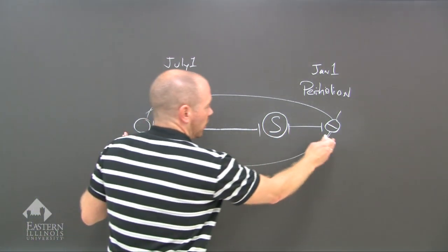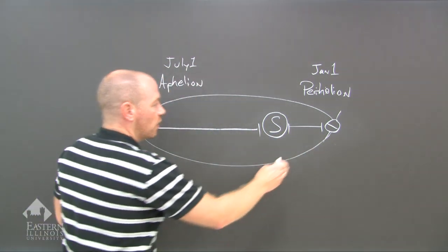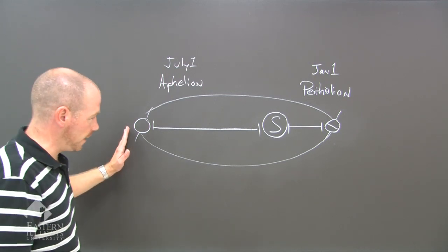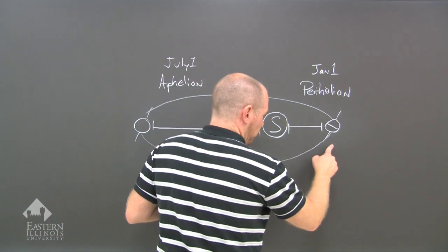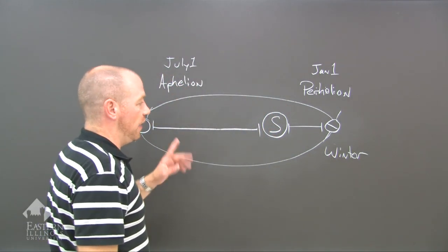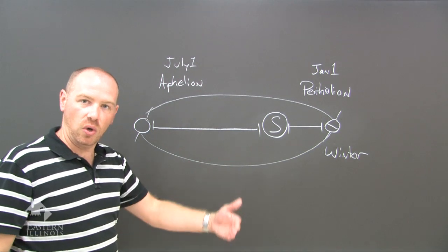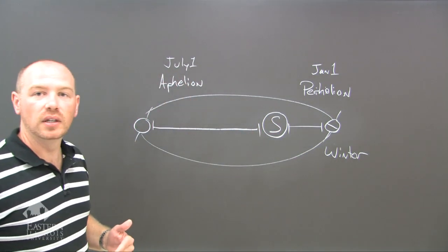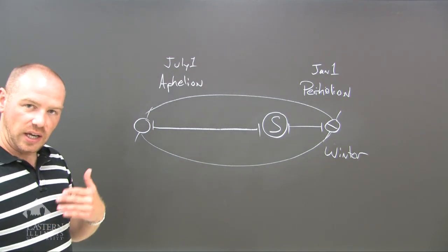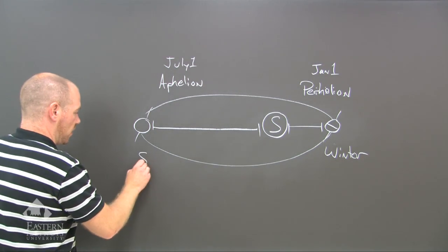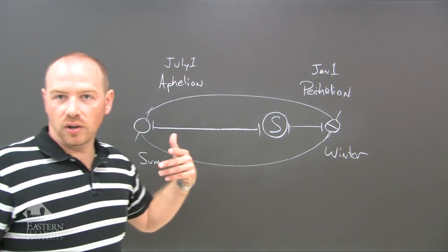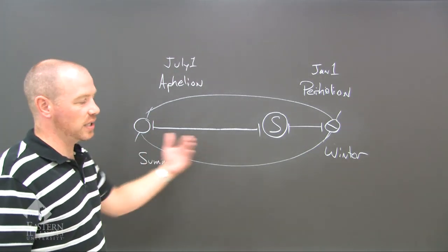So we've got two points in the year where we are closer to the Sun and further from the Sun. Let me point out again: this is our winter — the Northern Hemisphere's winter — and the tilt is the reason why it's colder, even though we are closer to the Sun. The tilt of the Earth causes us to have less radiation at the surface. And then this is our summer. So this is the Earth-Sun relationship dealing with distance from the Sun.